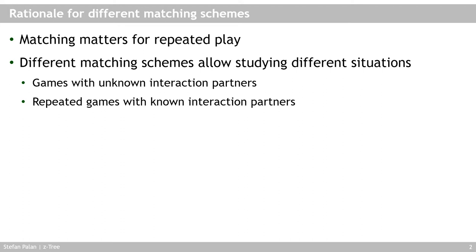Why do we need matching schemes? Matching matters when you have repeated play — when the same participants play the same experiment multiple times. This happens rather often in economic experiments because experimenters like to collect multiple observations from the same participants to increase statistical power, or to model situations where people interact with each other or with different partners repeatedly. Different matching schemes allow you to study different situations.